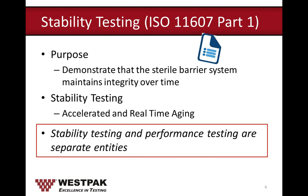ISO 11607 is a guidance document with two parts; our main focus is Part 1. Stability testing shall be performed using real-time aging. However, since real-time aging takes a while, it is acceptable that accelerated aging is considered sufficient evidence to claim expiration dates until the data from real-time aging studies are available. Real-time aging and accelerated aging tests should begin simultaneously.